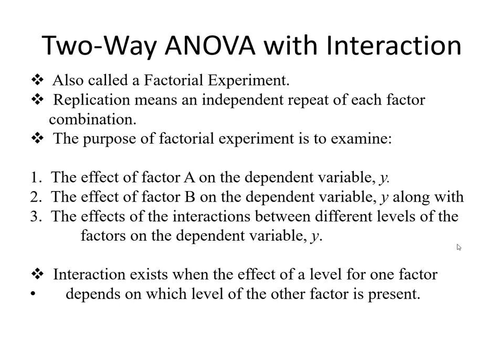The purpose of a factorial experiment is to examine the effect of Factor A on the dependent variable Y, and the effect of Factor B on the dependent variable Y — the same as in two-way ANOVA without replication. The third analysis is totally different: it is called two-way ANOVA with interaction because we repeat the process and examine the effect of the interaction between different levels of the factors on the dependent variable.